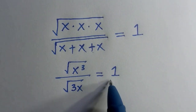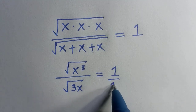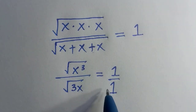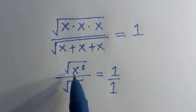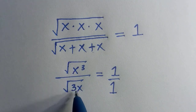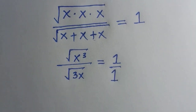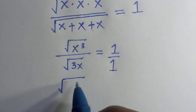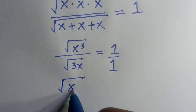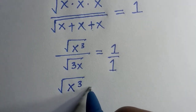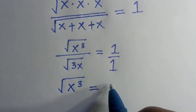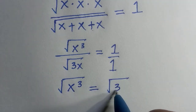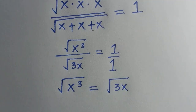So, if we divide this by 1 as well, by cross multiplying — we multiply 1 by 1, and this also by this. Then we have the square root of x to the power of 3 equals the square root of 3x.